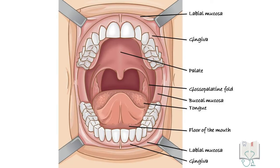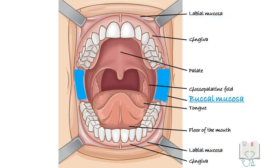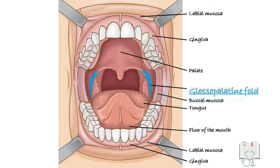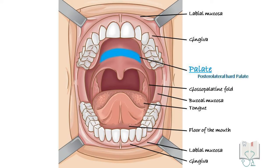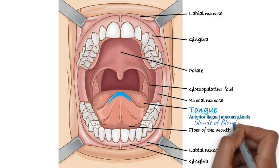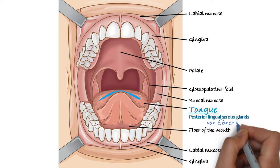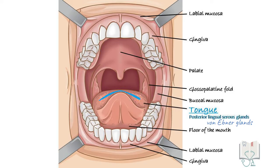Minor salivary glands are named by location: labial salivary glands in the upper and lower labial mucosa; buccal salivary glands in the buccal mucosa; glossopalatine glands in the glossopalatine fold (also called the anterior faucial pillar); palatine glands in the posterolateral hard palate, soft palate, and uvula. Lingual glands are divided into three groups: anterior lingual mucous glands (glands of Blandin and Nuhn) at the tip of the tongue; posterior lingual mucous glands in the posterior one-third; and posterior lingual serous glands, the von Ebner glands, adjacent the circumvallate papillae.